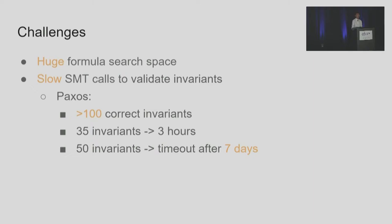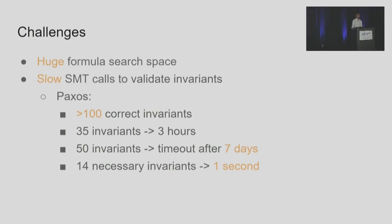So we have to avoid too complex SMT queries. For the Paxos protocol, a small subset of 14 invariants is enough to prove our desired property, but it is unclear how to identify this small subset of invariants.